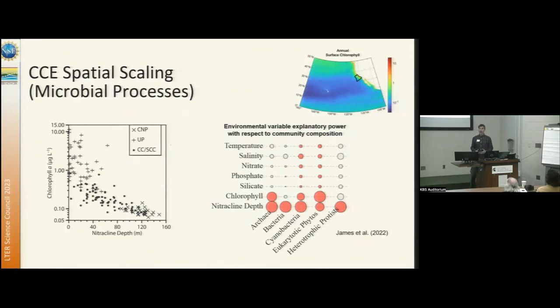More recently, we've been able to start looking at how communities vary with respect to nitrocline depth. So the graph on the right there is from a recent paper, looking at populations of archaeobacteria, cyanobacteria, eukaryotic phytoplankton, and heterotrophic protists. And for all those different communities, what we find is that the nitrocline depth is the variable that explains most of the changes in the community.